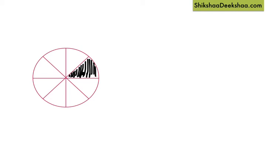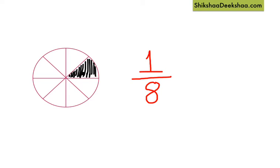Now can you help me write the fraction for the shaded part here? Total number of pieces are one, two, three, four, five, six, seven, eight — so we write eight at the bottom. The number of shaded pieces is just one, so we write one at the top. The fraction for the shaded part is one by eight.